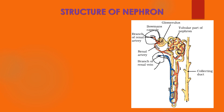Each nephron is connected to a collecting duct, meaning the nephron brings the urine into the collecting duct. These are all the important parts of the nephron.